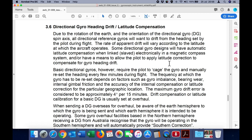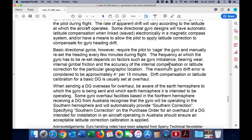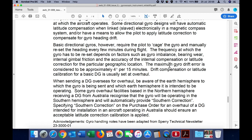Drift compensation or latitude calibration for a basic directional gyro is usually set at overhaul. When sending a directional gyro overseas for overhaul, be aware of the earth hemisphere to which the gyro is being sent and which earth hemisphere it is intended to be operating. Some gyro overhaul facilities based in the northern hemisphere receiving a DG from Australia recognize that the gyro will be operating in the southern hemisphere and will automatically provide southern correction.